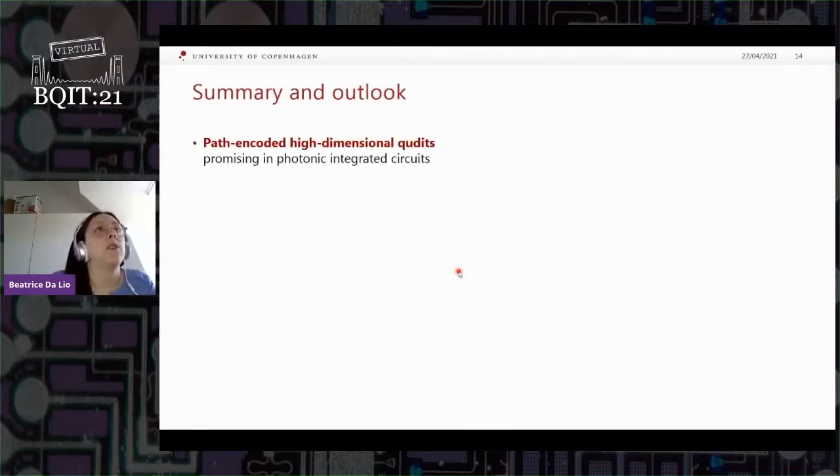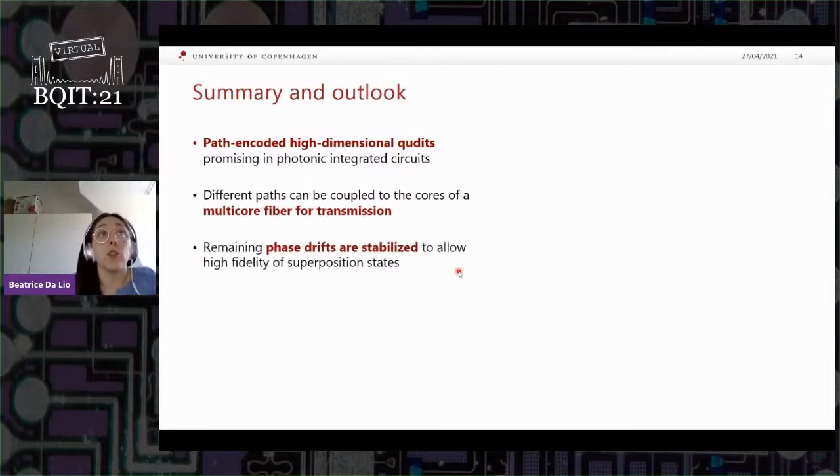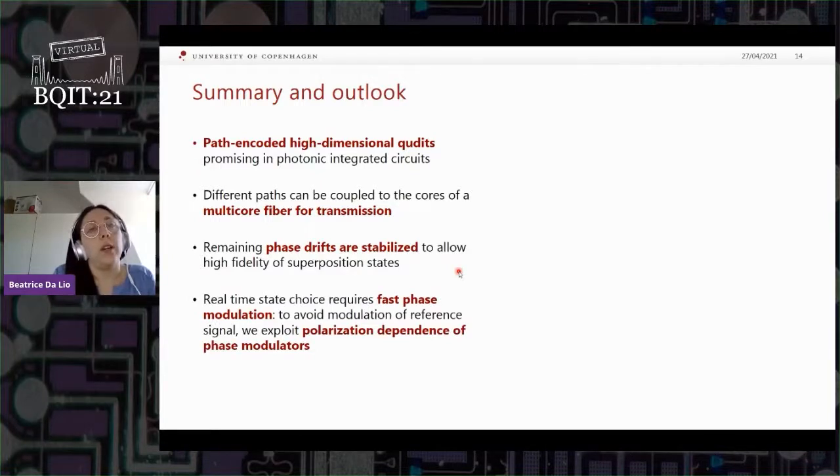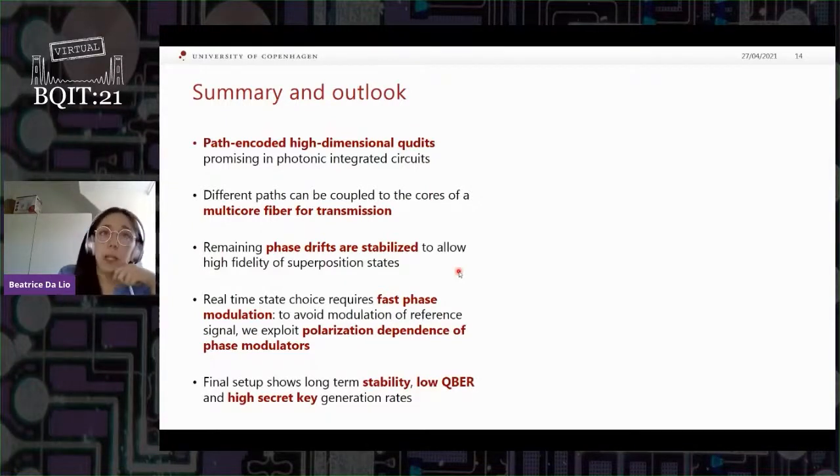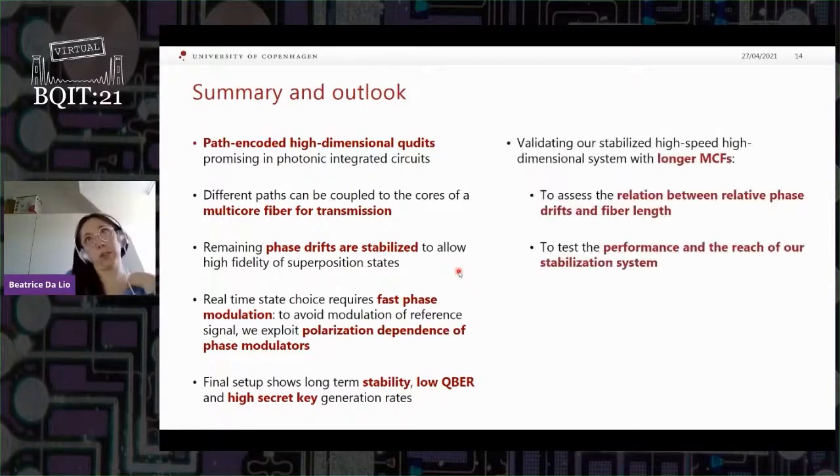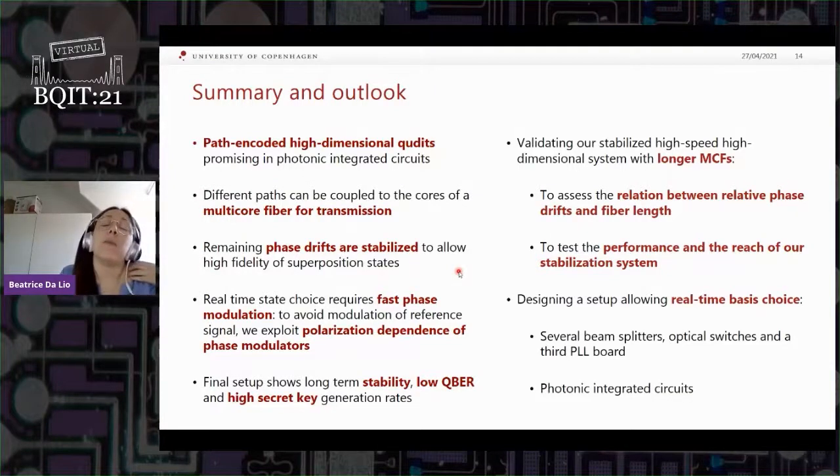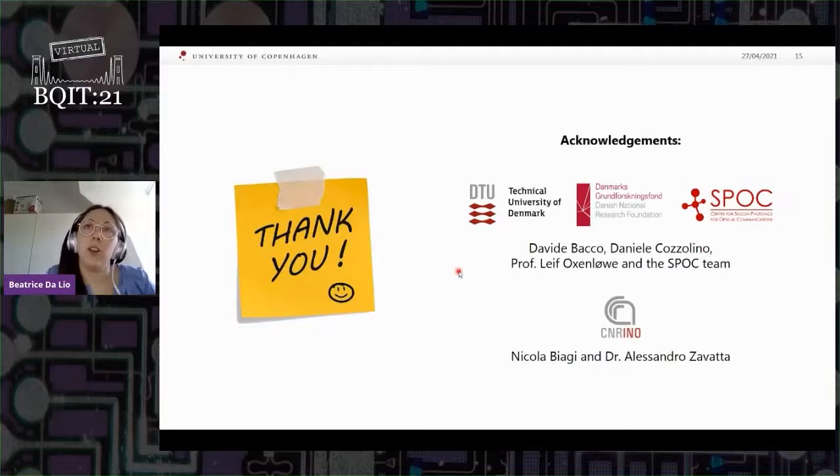So to summarize, path-encoded high-dimensional QKD is promising because of photonic integrated circuits. We can use them for quantum communication if we for instance use multicore fiber for transmission, and we can stabilize the remaining phase drifts. One way to have fast phase modulation that we thought of was to actually exploit this polarization dependence of the phase modulators. And this led us to a final setup that shows long-term stability, low quantum bit error rate, and high secret key generation rate. Finally, what we would like to do in the future is to validate our system with longer multicore fibers and maybe be able to design and implement a real-time basis choice setup. So with this, I would like to thank you and acknowledge all the people that made these results possible.